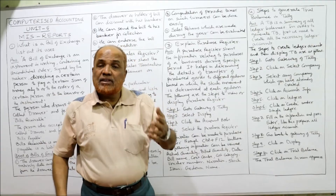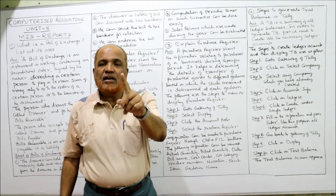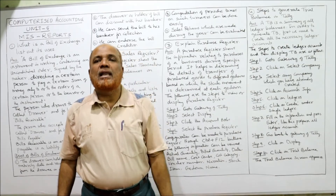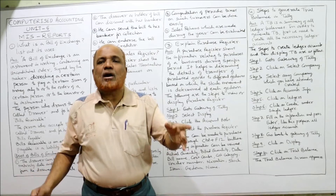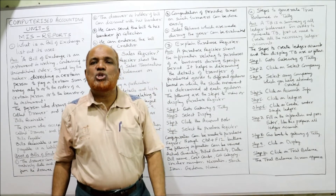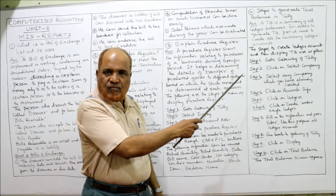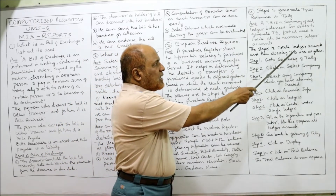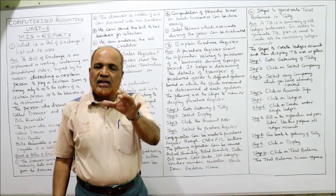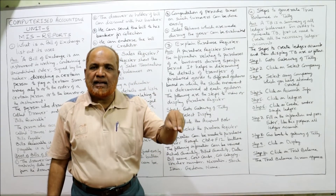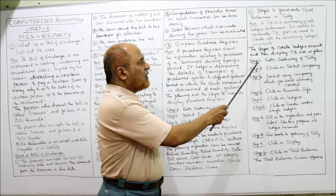To generate a trial balance, we first need to create all the necessary ledger accounts. Without opening ledger accounts, we cannot make a trial balance. So the first thing is to open all ledger accounts with the necessary details, and then we can generate the trial balance. We will first see the steps to create ledger accounts and then display the trial balance.